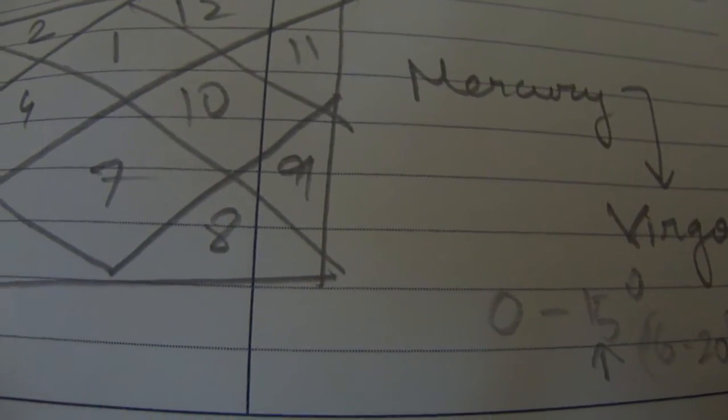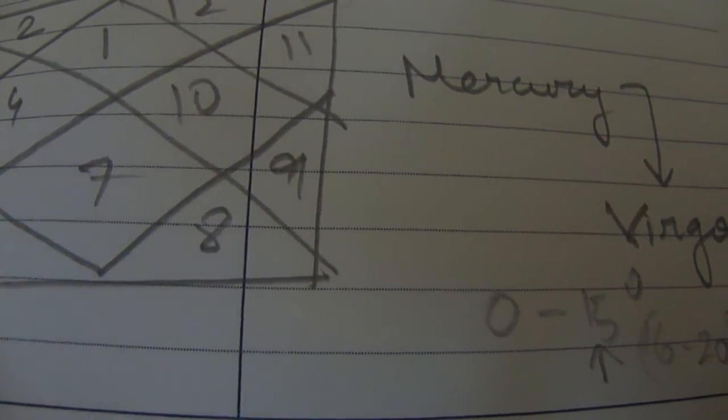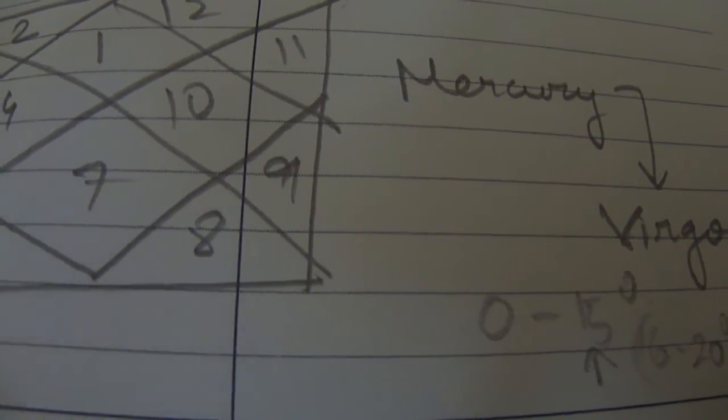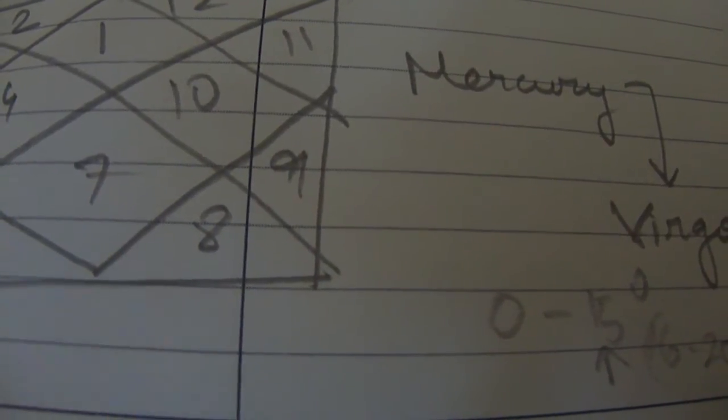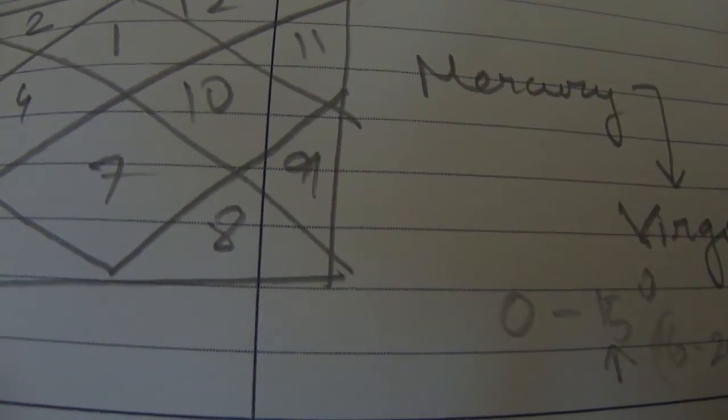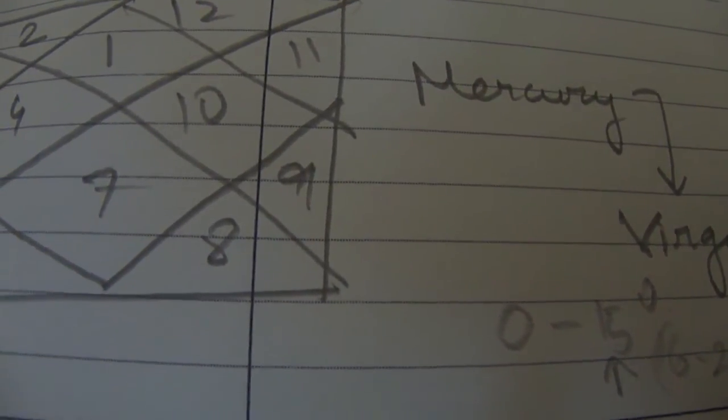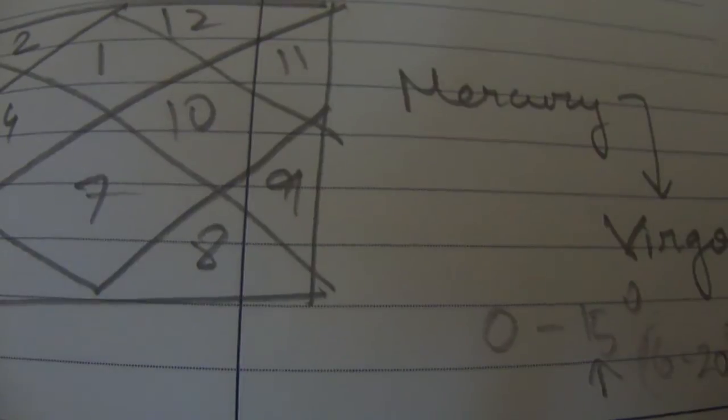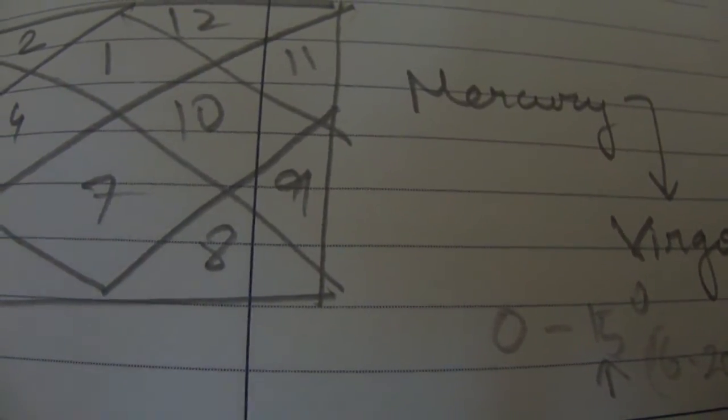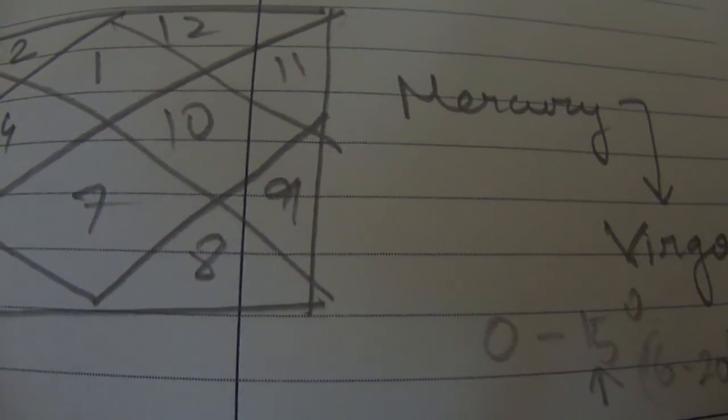And definitely what happens is that when Mercury is, or for that matter, if any planet is exalted, it definitely gives you some high position in life related to that planet. So again, when Mercury is in the sign of Virgo and is exalted, you can expect high position in life. Now again, this will be coming because of the qualities of Mercury,